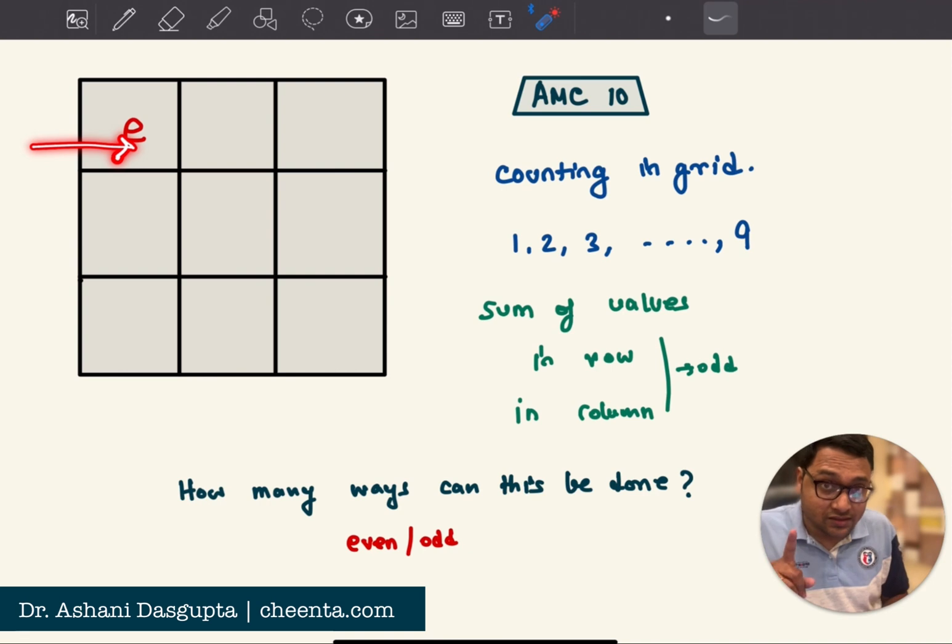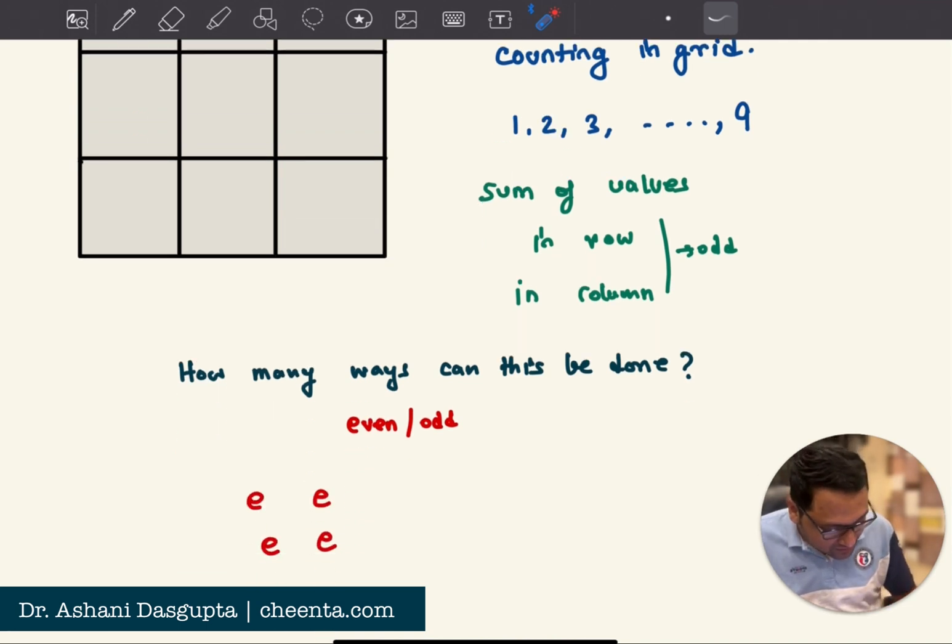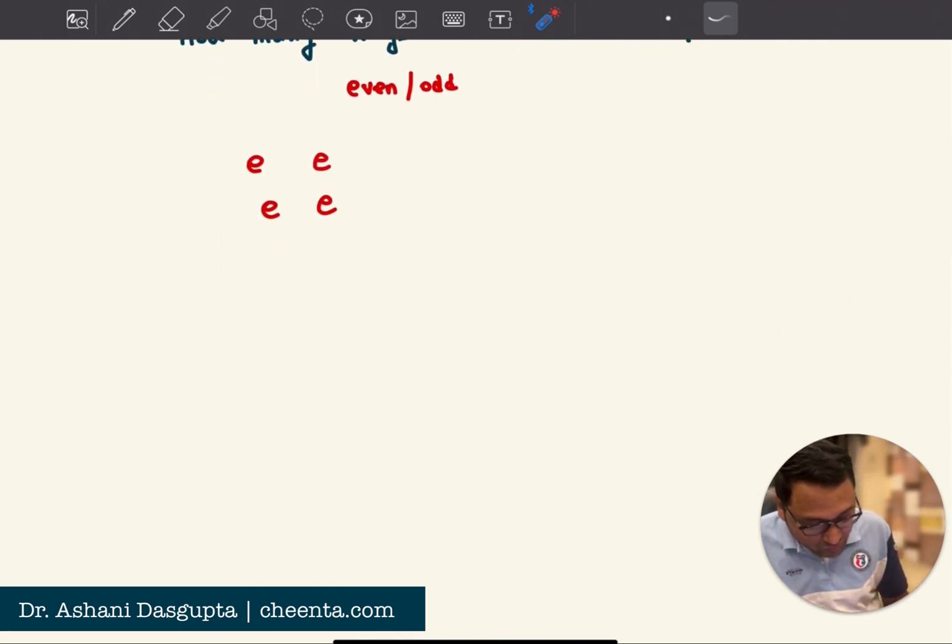Think about it. If you want the sum of the numbers to be odd, there is either no odd numbers in that row or there are exactly one odd number and two even numbers. So here is the principle that I was talking about. Here is the principle and this is very powerful and simple.